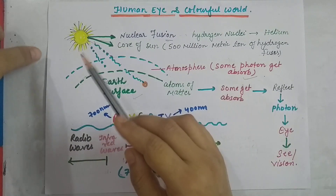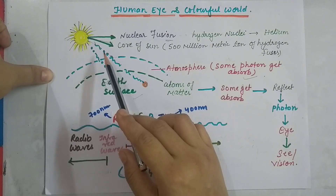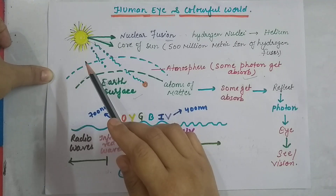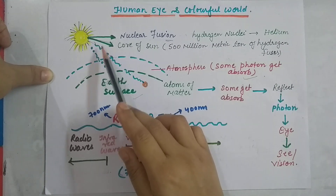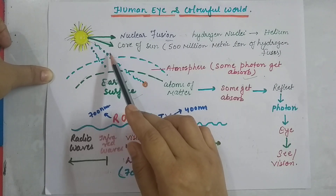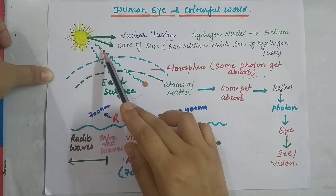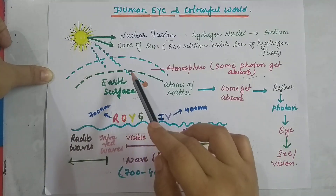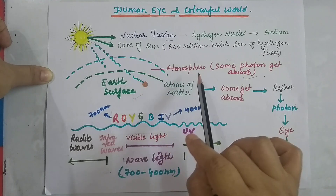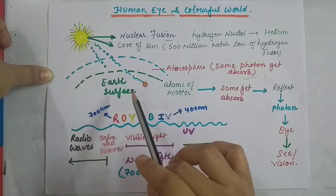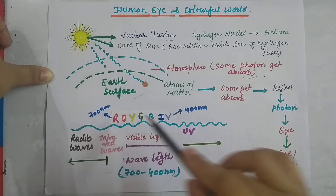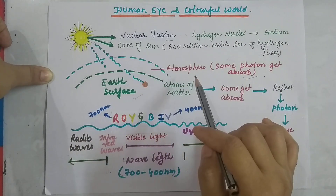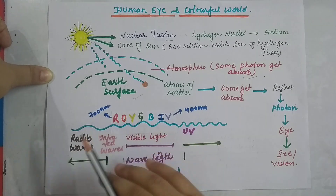The light that we call light — we already know that light shows the property of both wave as well as particle. In the form of photons or energy particles, they travel from the atmosphere to the earth's surface. During the travel, some of the photons get absorbed in the atmosphere and some reach the earth's surface.